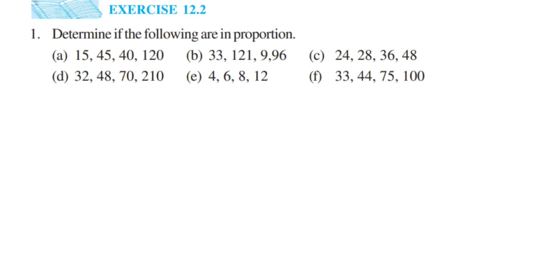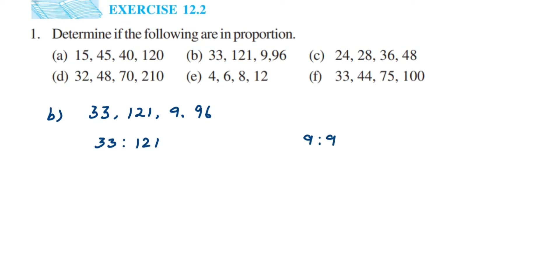Second question: we have 33, 121, 9, and 96. First ratio is 33 is to 121, second ratio is 9 is to 96. For 33 by 121: cancel in the eleven table — eleven threes are 33, eleven elevens are 121 — so we get 3 by 11. Both 3 and 11 are prime numbers and don't share a common factor, so 3 by 11 is fully reduced.